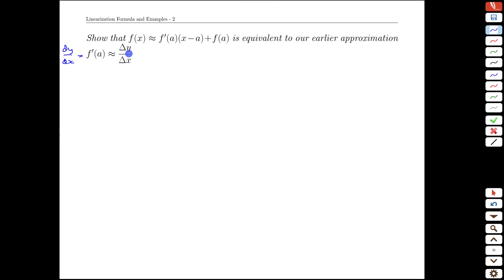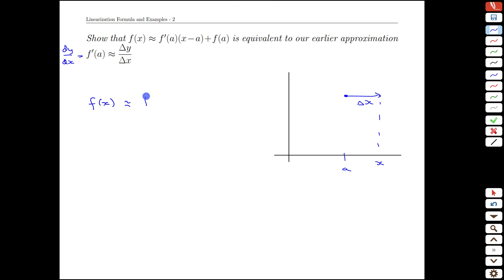There's nothing different between these because it's easy to convert from one to the other. Imagine we have a reference point a, and we go out for delta x here. The idea is that new point is some x value. Our function is approximately equal to f prime of a, x minus a, plus f of a.